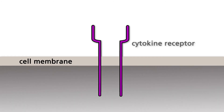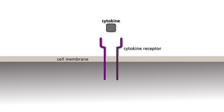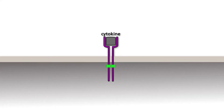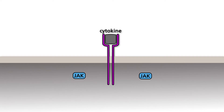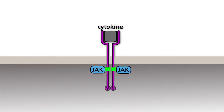The pathway starts at the cell membrane with the activation of a membrane-bound cytokine receptor by an interferon, an interleukin, or a hormone like erythropoietin or thrombopoietin. Cytokine receptors do not harbor kinase domains for auto- or transphosphorylation of tyrosine residues. Nevertheless, activated cytokine receptors are able to recruit intracellular tyrosine kinases of the JAK family to their cytoplasmic domains.